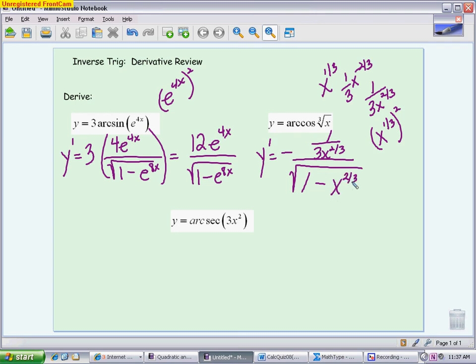You can either leave your answer like this, or you could make both denominators be together. Another option for your answer is to write it as negative 1 over 3x to the 2/3 times radical 1 minus x to the 2/3. That's what you would see in a multiple choice setting. That would probably be the answer they would leave as their final answer.